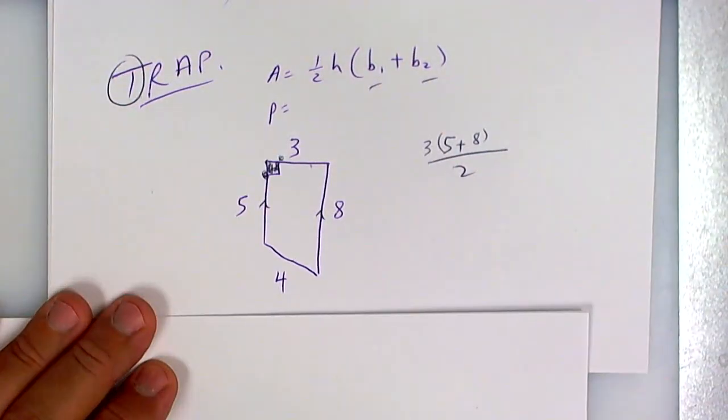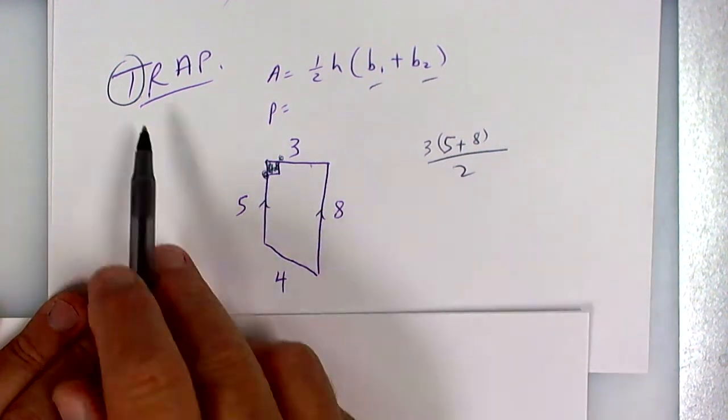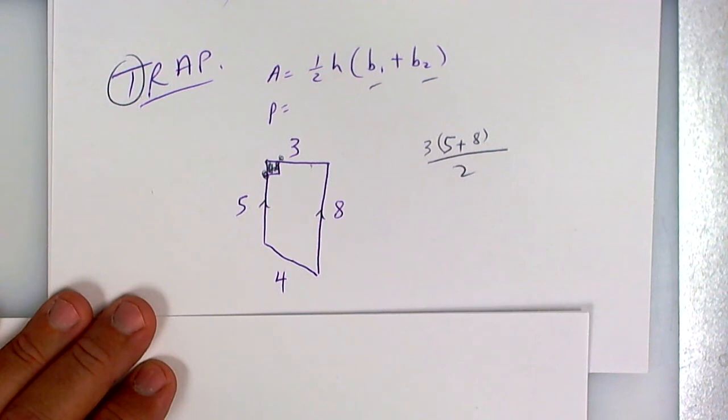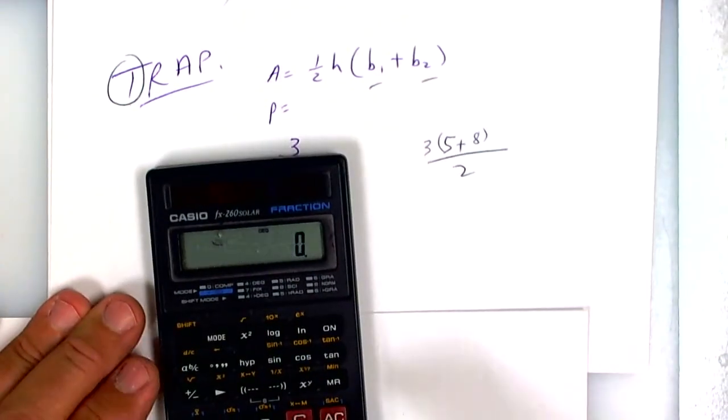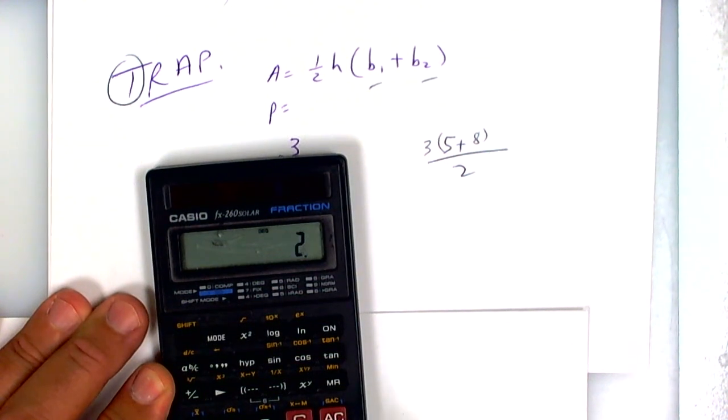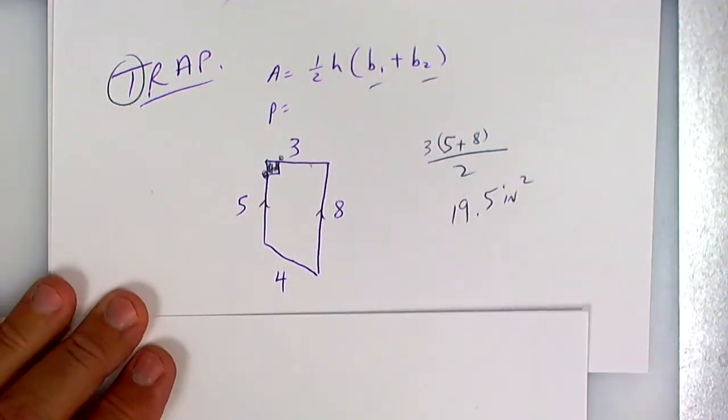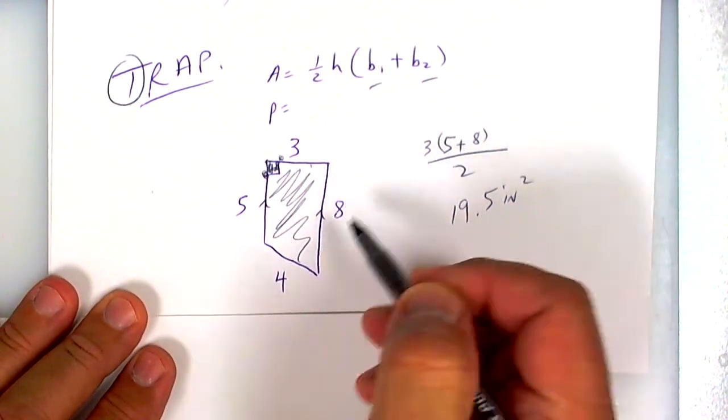Last thing you need to do is divide by 2. Remember, triangles or trapezoids—they start with a T. If they start with a T, you must divide by 2. We're going to do parentheses first. Well, 5 plus 8, that's 13 times 3, press equals, divide by 2.